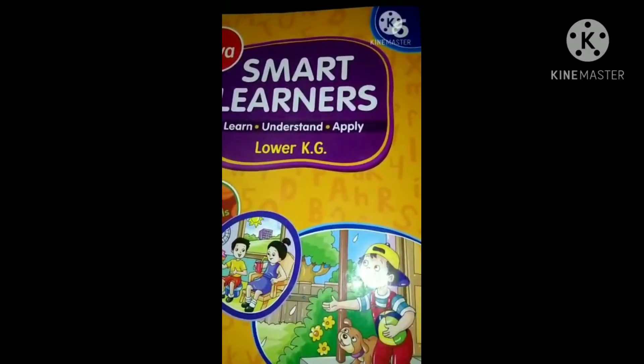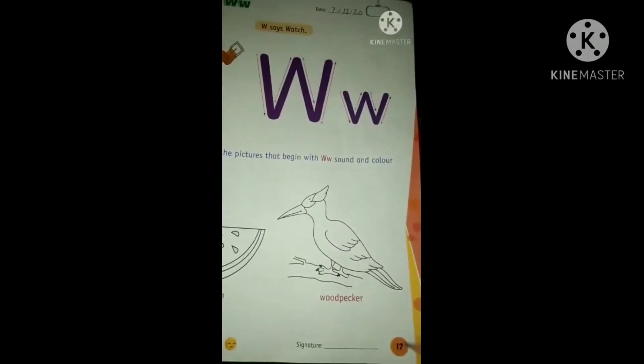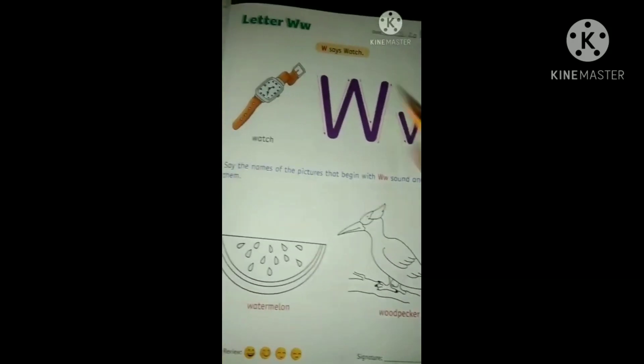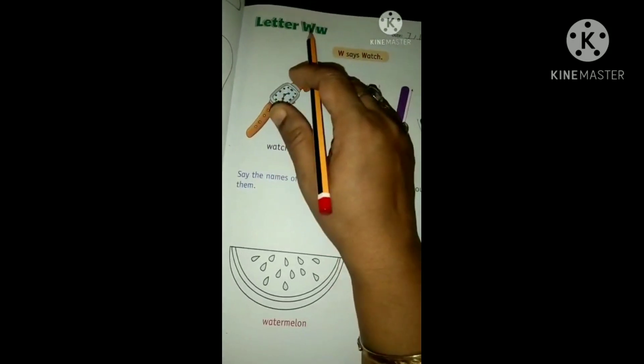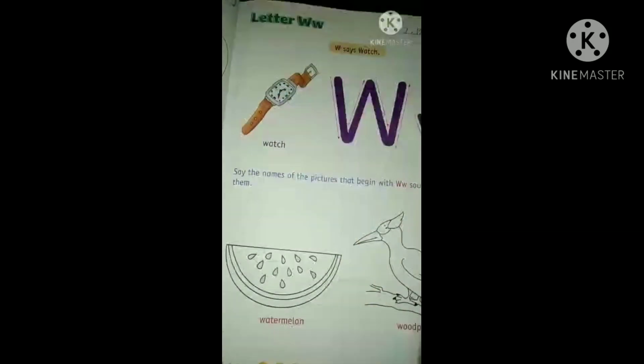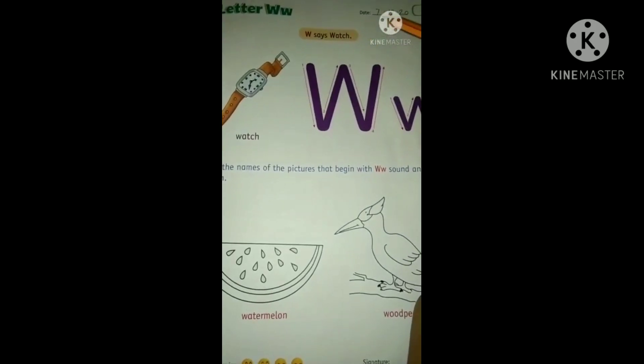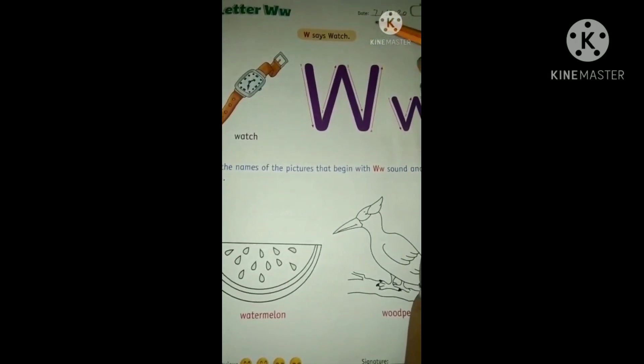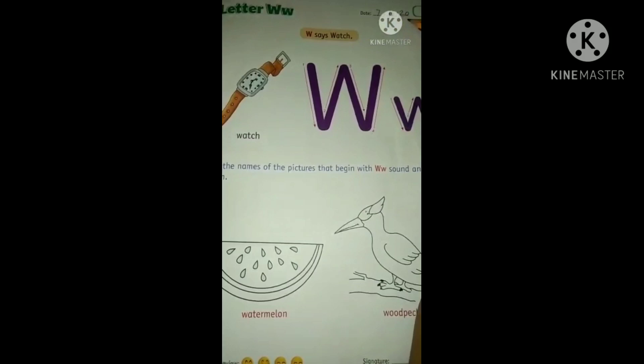Let's see, in book number 6, on page number 17, today we will learn letter W, capital and small both. Now see, we will write the date first, it is 7th December 20, right?